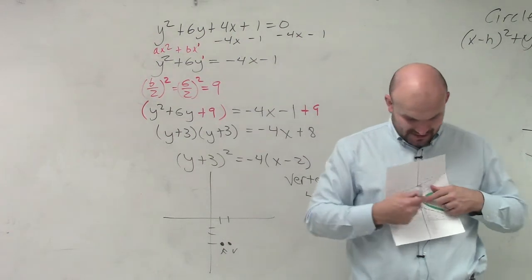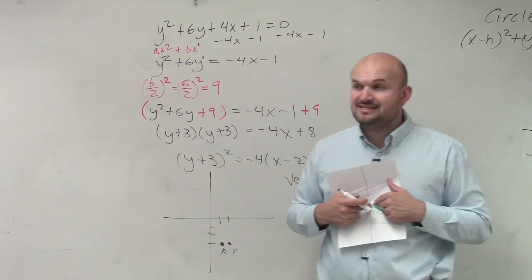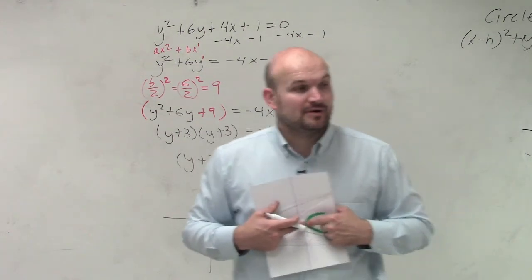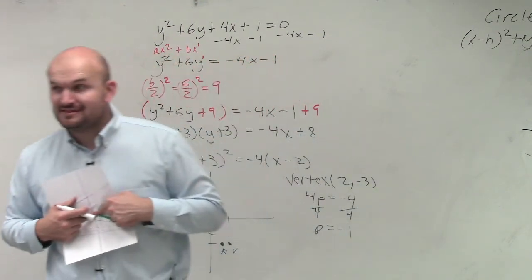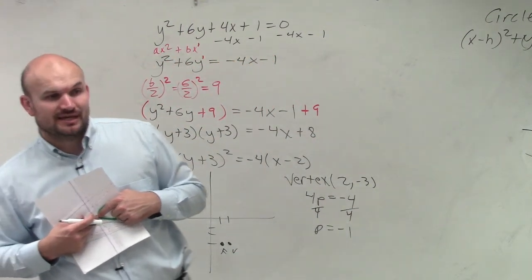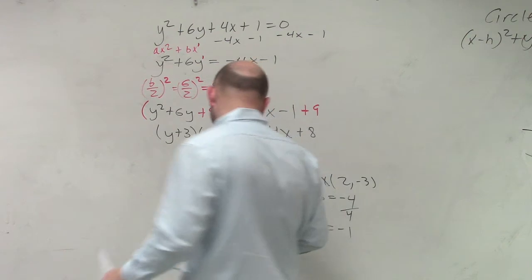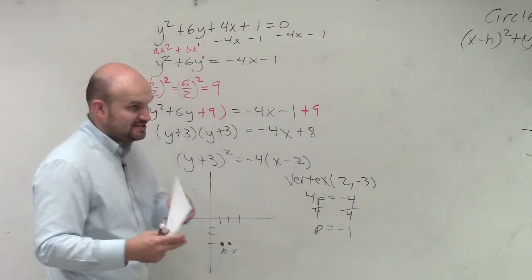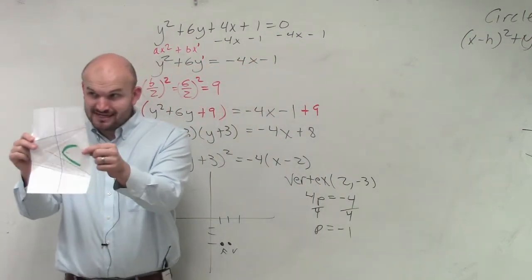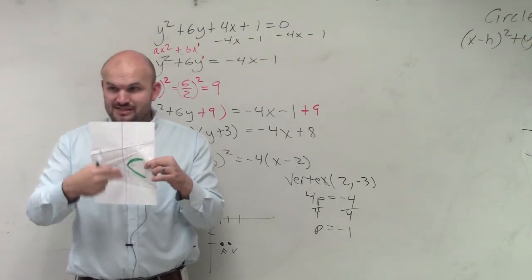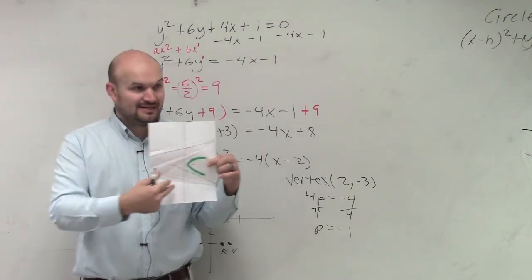And then, remember, the distance from your vertex to your directrix is the opposite of p. So if I'm going 1 to the left, that means my directrix, I have to go 1 to the right. And then, also, last note, if I have a horizontal parabola, my directrix is a vertical line. Does everybody see that? Yes?